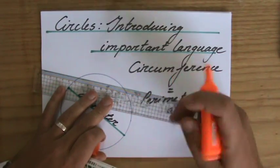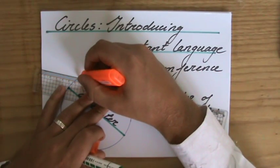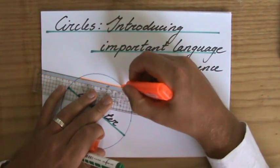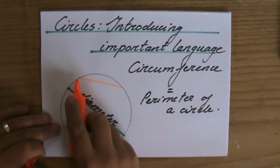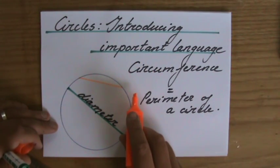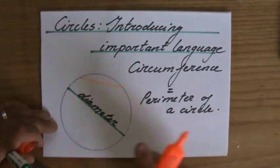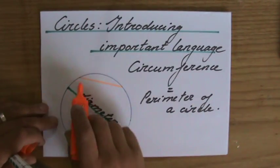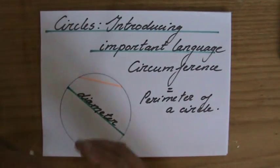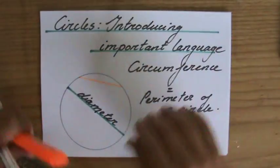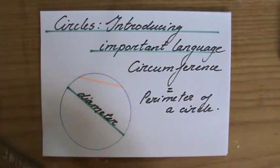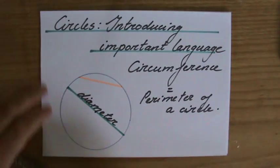So if I would draw this line from the circumference to the other side of the circumference, is that also a diameter? No, it's not, because it doesn't go through the midpoint. That is a chord, and we will talk about that later. This is just introducing the basic language.